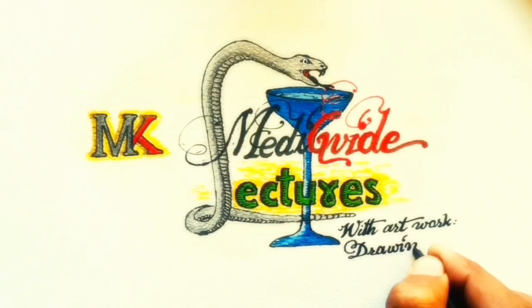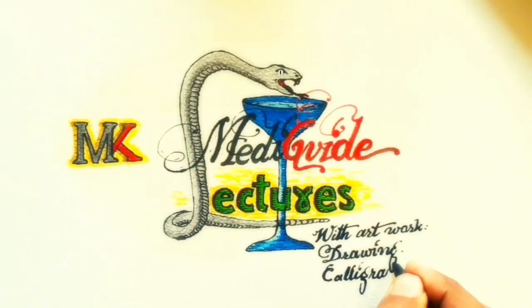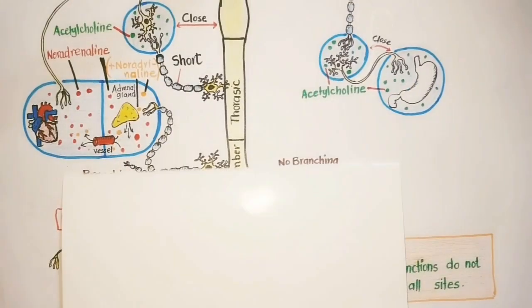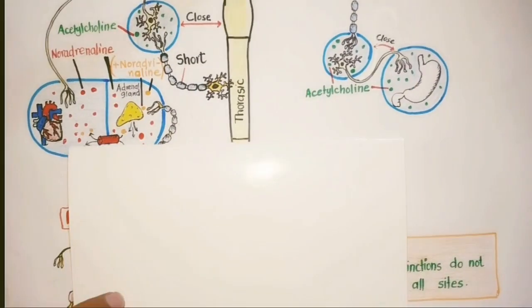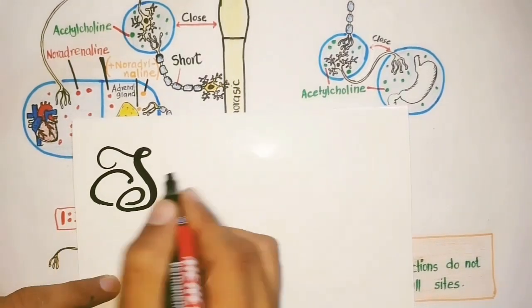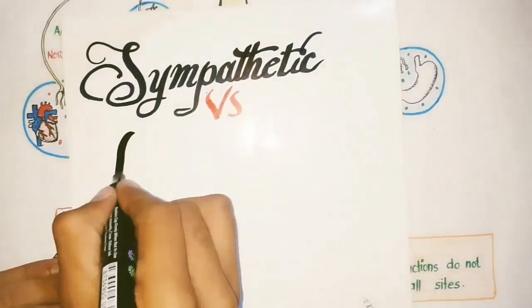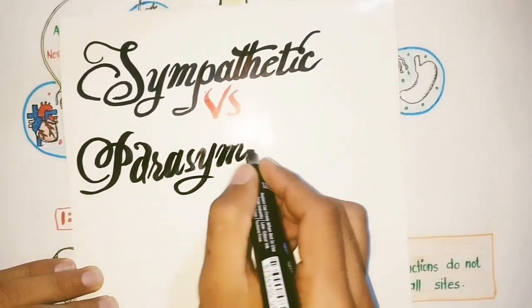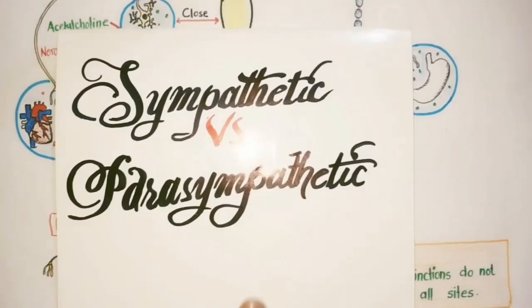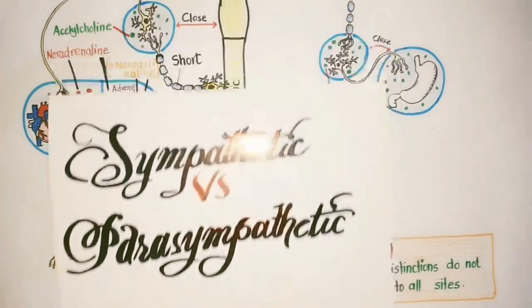Welcome to my channel MK MediGuide lectures, learning with artworks like drawing and calligraphy. In this video we will discuss the anatomical differences between the sympathetic nervous system and the parasympathetic nervous system. But before, this will be just a brief overview. For each division we have uploaded videos, so if you are new here, watch them later for more understanding.